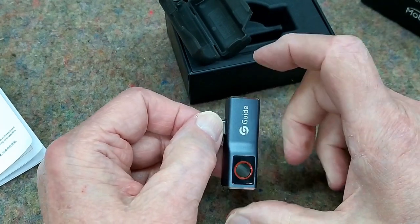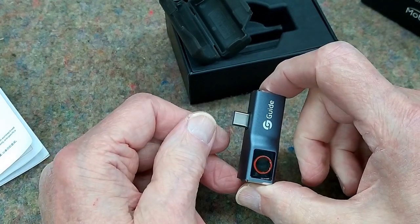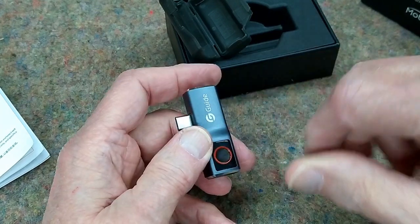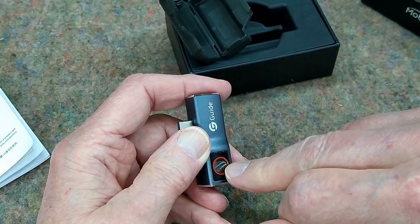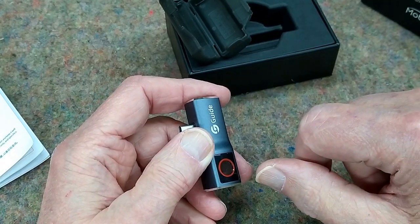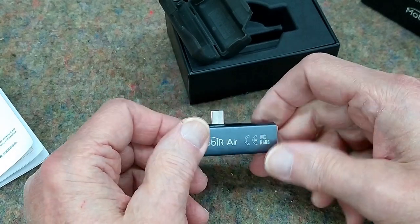This is about the same length as a AA battery, and this plugs into the bottom of your phone, and this is the infrared camera. It works independent or separately from the smartphone cameras.